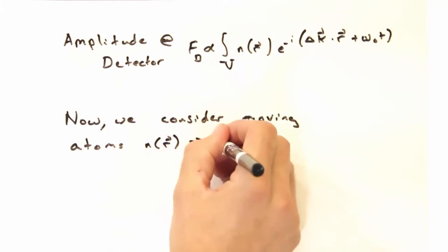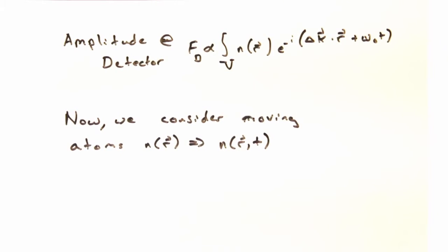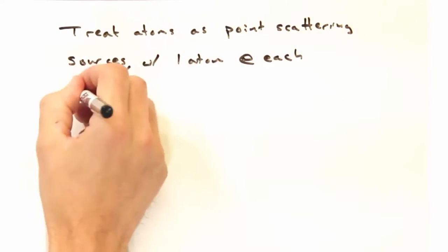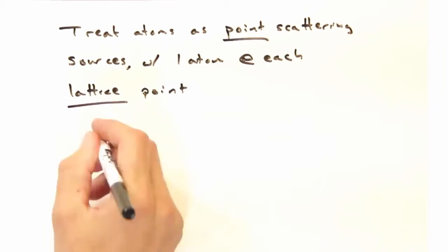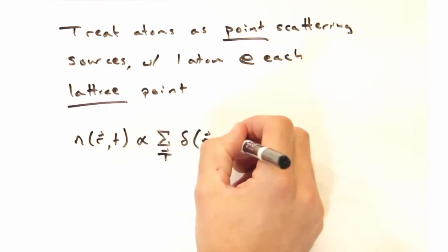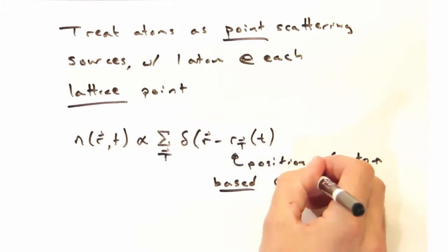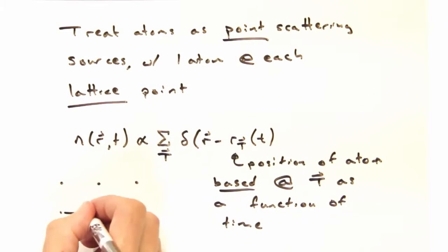So today, we're going to consider moving atoms where the scattering density n now has a time dependence. So rather than developing a generalized approach for any n of r and any time variation, we're going to make a couple big approximations today. First, we're going to treat the atoms as point scattering sources with one atom at each lattice point. When we do this, we can say that our scattering density n is then simply the sum across the set of delta functions positioned at r minus some r t. And this second term here is going to be the position of the atom that's based at the lattice point t, but that position of the atom is going to vary a bit as a function of time. Down here on the lower left, we can see that variation with time.